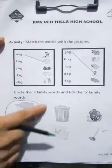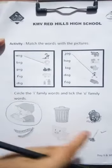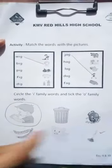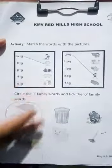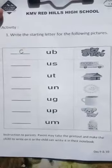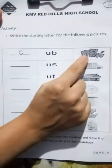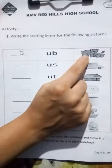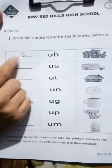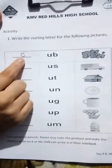Next, circle the I family words and tick the O family words. The rest you can do by yourself. Here, look at the picture and write the starting letter and read together.